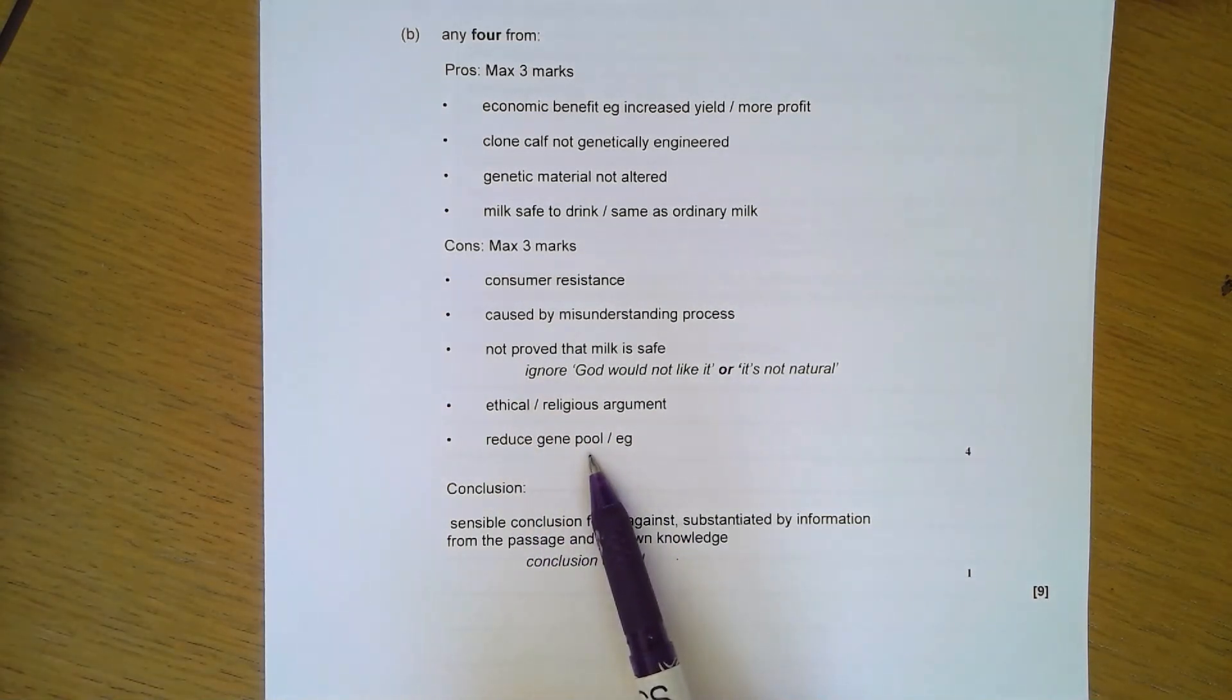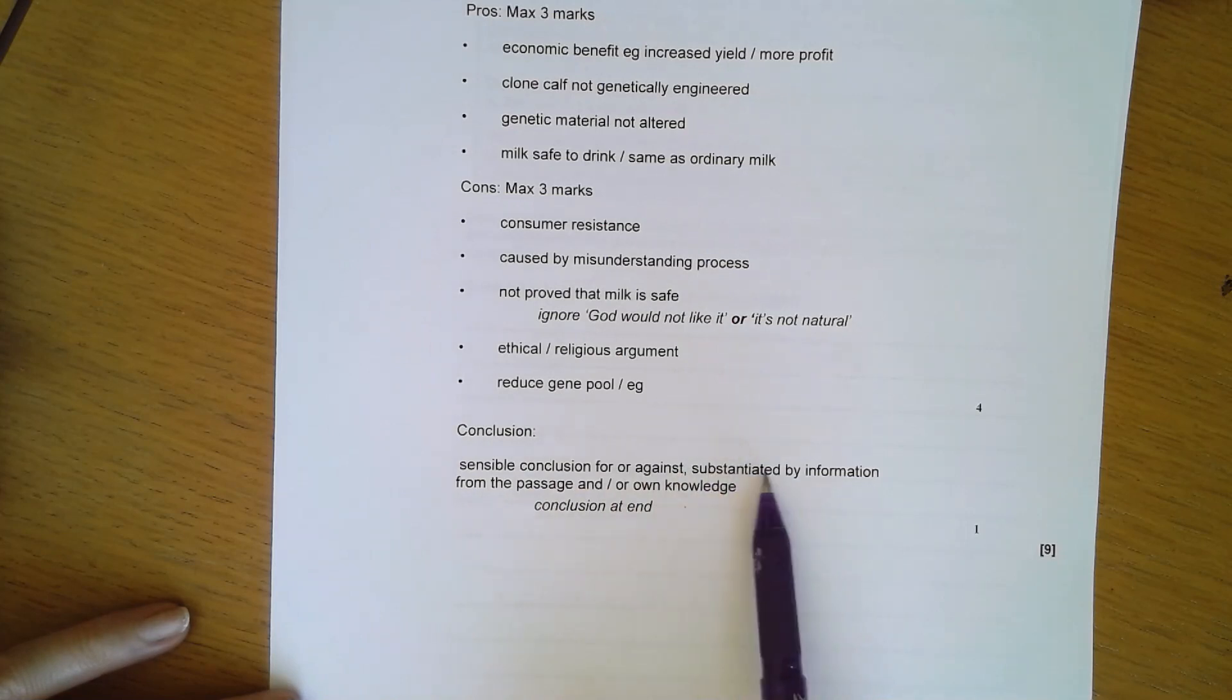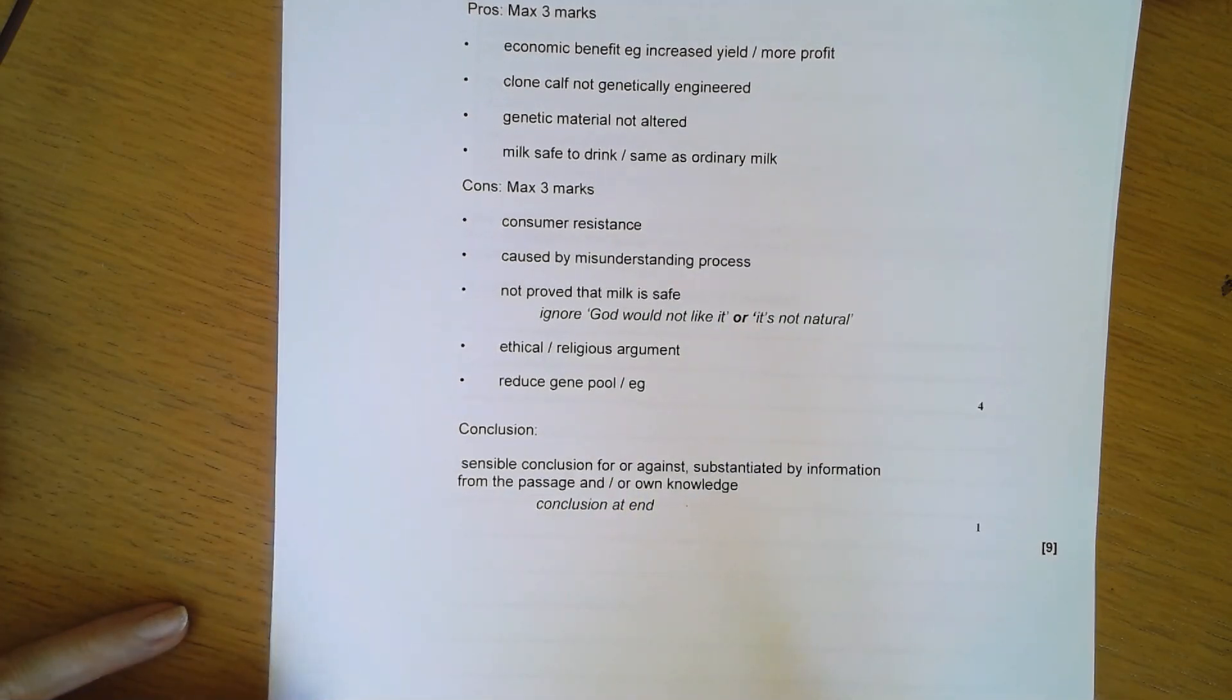Also, if you do clone, you're reducing the gene pool because you don't have sexual reproduction. Your conclusion can be either for or against, just as long as you back it up with information from the passage or your own knowledge. The conclusion should be at the end, a simple sentence saying, Therefore, overall, I believe that the government should allow production of milk from clone champion cows because it would be economically beneficial and the milk is completely safe.